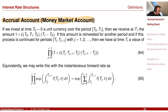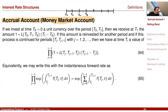Assume we have some time discretization given that discretizes the interest rate periods. So I can invest from T0 to T1, from T1 to T2, and so on. If I invest one unit at time T0, what do I receive back at time T1? I receive back 1 plus L for the period from T0 to T1 — the interest rate that I have contracted, so observed at T0.